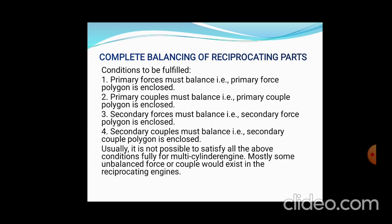For complete balancing of the reciprocating parts, the conditions to be fulfilled are: first, the primary force must be balanced — meaning the primary force polygon should be closed; second, the primary couple must be balanced — again the primary couple polygon should be closed; third, the secondary forces must be balanced — the secondary force polygon should be closed; and fourth, the secondary couples must be balanced — the secondary couple polygon must be closed. In actual cases, for fully balancing a multi-cylinder engine, some unbalanced force or couple would typically still exist. The graphical method involves drawing the vector forces and couples acting and checking whether the polygon closes — a closed polygon means balanced; if not closed, that is an unbalanced situation.